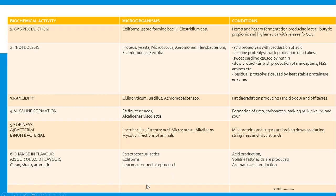Now, some additional notes on the biochemical activities and the microorganisms involved. The first is gas production: coliform, spore-forming Bacillus, and Clostridium species are involved, occurring because of homo and hetero fermentation producing lactic, butyric, propionic, and higher acids with the release of carbon dioxide.